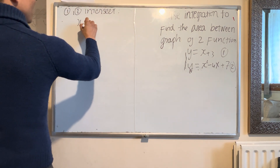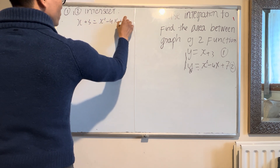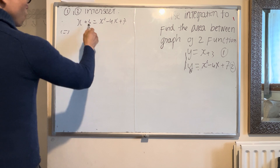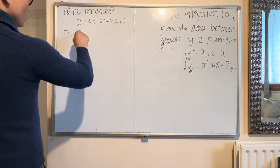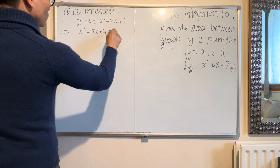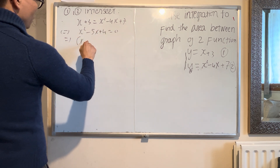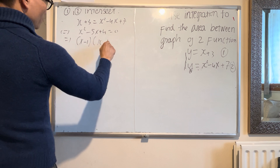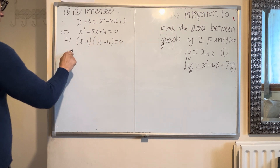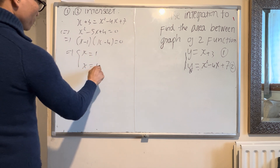Setting the two functions equal: x squared minus 3x plus 7 equals x plus 7 — move everything to one side to get x squared minus 4x plus 3 equal to zero. Factor: (x minus 1)(x minus 4) = 0, so x equals 1 and x equals 4.